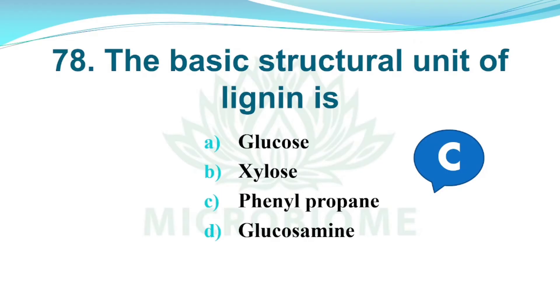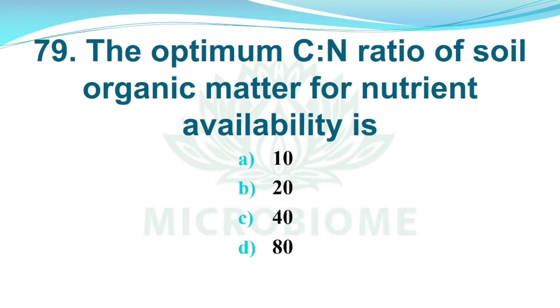And next, the optimal C:N ratio of soil organic matter for nutrient availability is. Options: A) 10, B) 20, C) 40, D) 80. The right answer is Option A, 10.